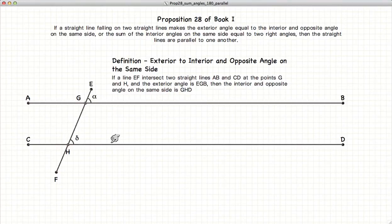If we have three lines that cross each other, the exterior to the opposite and interior angle would be the relationship between alpha and delta. So these two angles are what is called the exterior to the opposite interior angle.